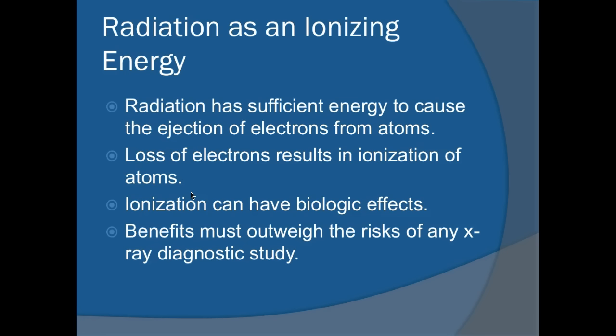Radiation is an ionizing energy — radiation that has sufficient energy to cause the ejection of electrons from atoms. The loss of an electron results in ionization of the atom, making it very unstable. Ionization can have biological effects: it can kill the cell and cause long-term effects. When doing an x-ray or any kind of radiation exposure, the benefits must outweigh the risks for any study. If a study is not necessary, we need to question why we're doing it.